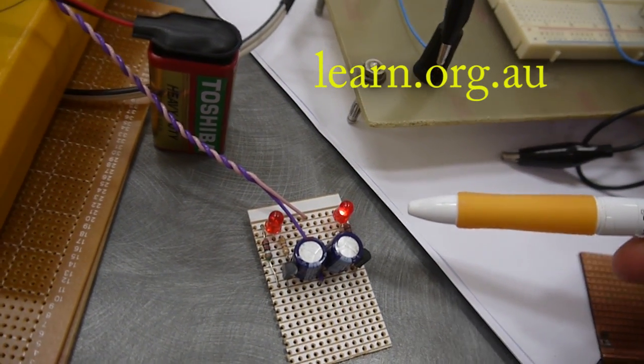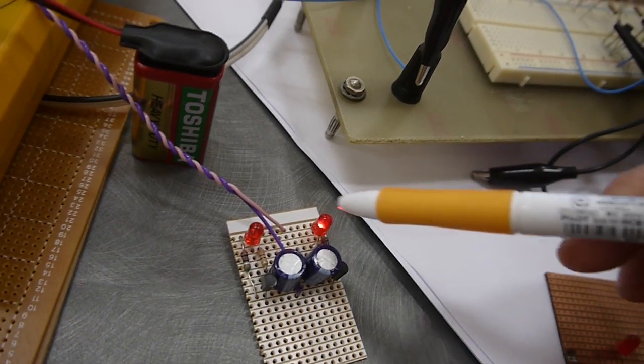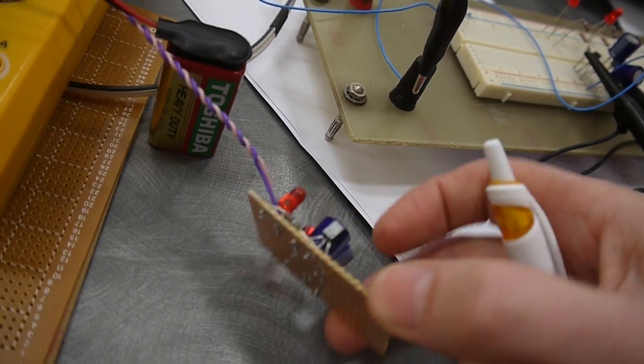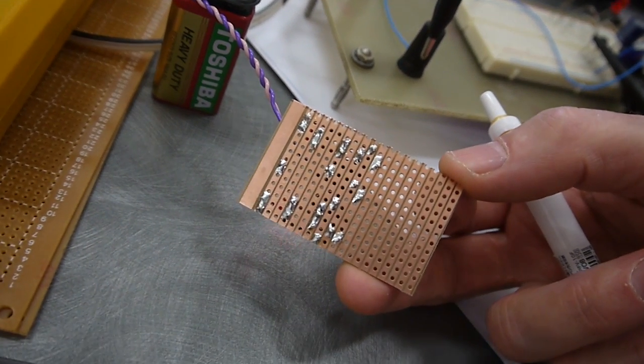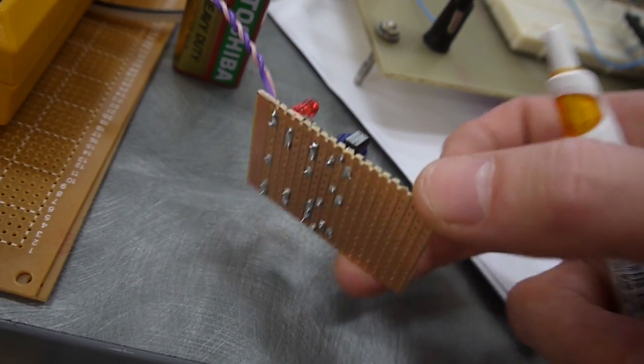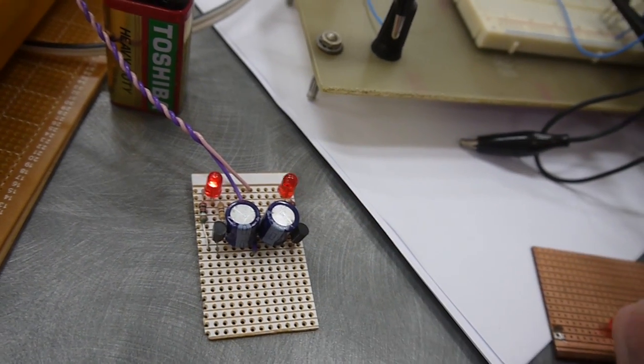This is the finished project of the flasher. This one's been built on a particularly small bit of Vero board. It didn't need to be built quite as small as that, but it's very impressive that it has been done so small. The flash rate appears to be about 2 flashes per second.